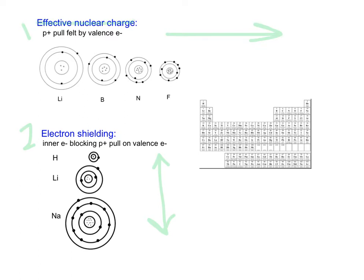Let's focus on effective nuclear charge first. Effective nuclear charge is the fact that the protons in the nucleus have a positive pull that the outer electrons feel. As you go across an energy level, the energy level is not changing. But as you go across, the number of protons is changing — there's more and more positives in the nucleus, and more positive means a stronger pull, so it's going to attract those electrons more tightly.